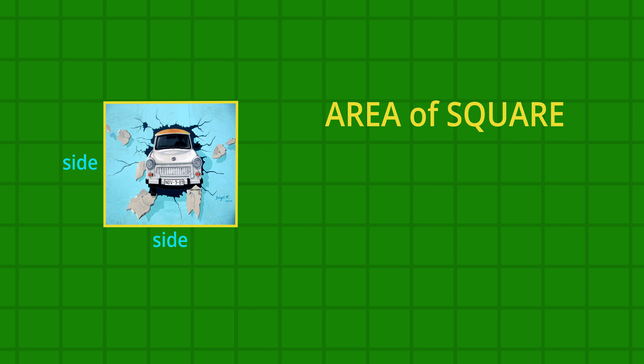Now for the area of a square. Again we multiply the length by the width, but because the sides are equal we change the rule. So the area of a square equals the side multiplied by the side. In this example, each side is three meters — the first side is three and the second side is three — so the area is nine square meters.